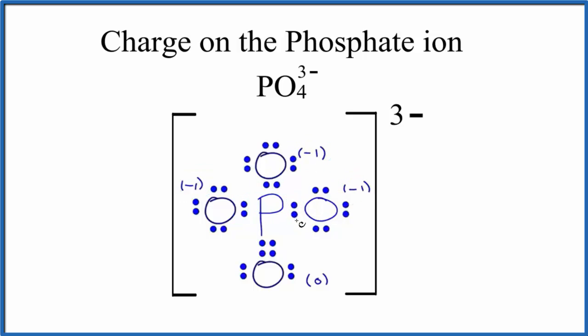The phosphorus has a formal charge of 0, and then this oxygen with the double bond has a formal charge of 0 as well. So if you add up all the formal charges, negative 1, negative 1, and negative 1, you'll get the ionic charge, this 3 minus here.